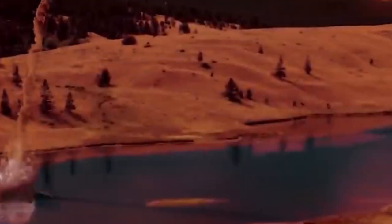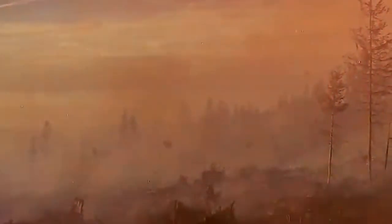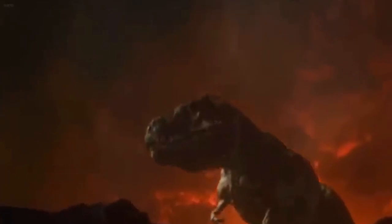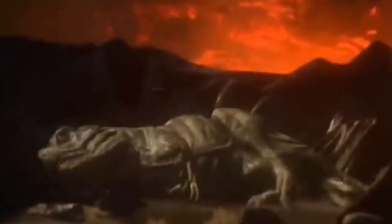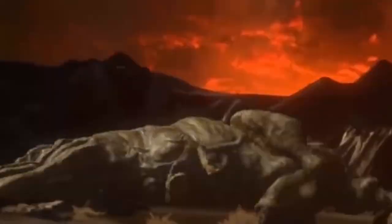The Eocene Epoch, around 56 to 34 million years ago, saw the emergence of iconic mammals like the first true primates and early relatives of modern-day whales. The Oligocene and Miocene Epochs witnessed the spread of grasslands and the evolution of diverse herbivores and predators, setting the stage for the ecosystems we recognize today.